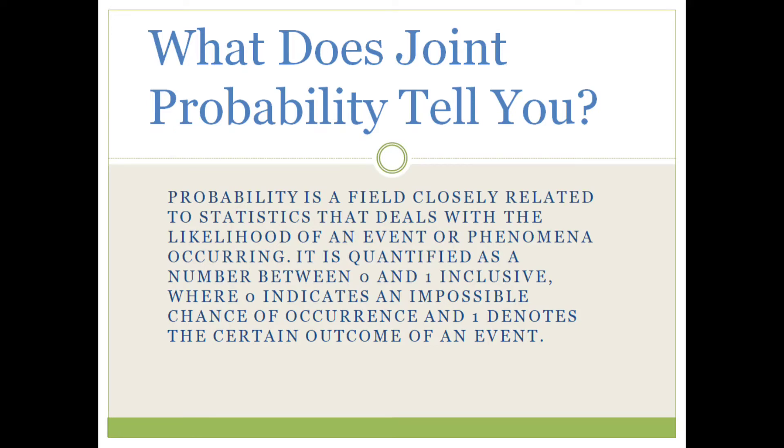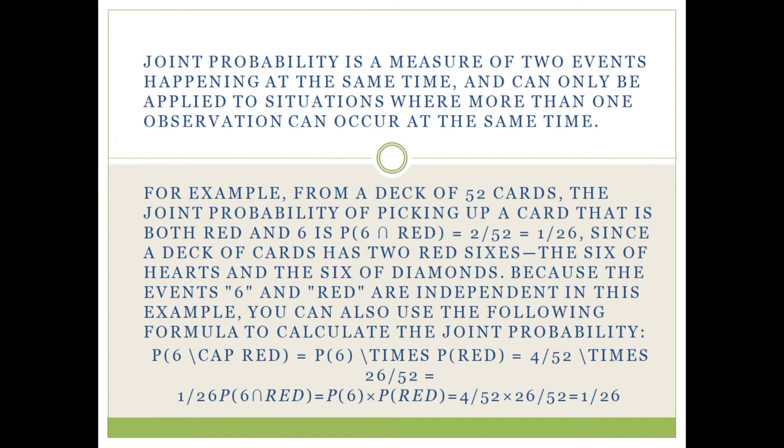Joint probability is a measure of two events happening at the same time, and can only be applied to situations where more than one observation can occur at the same time.